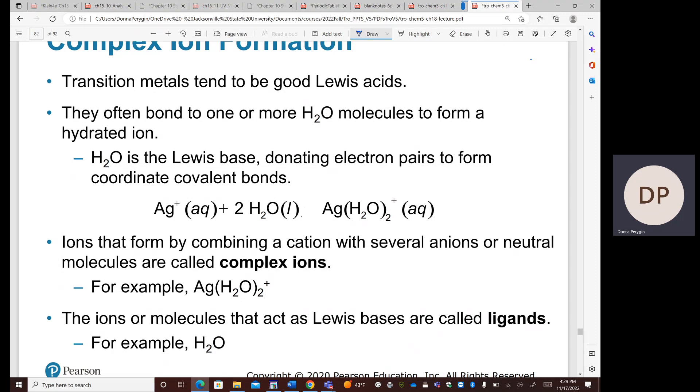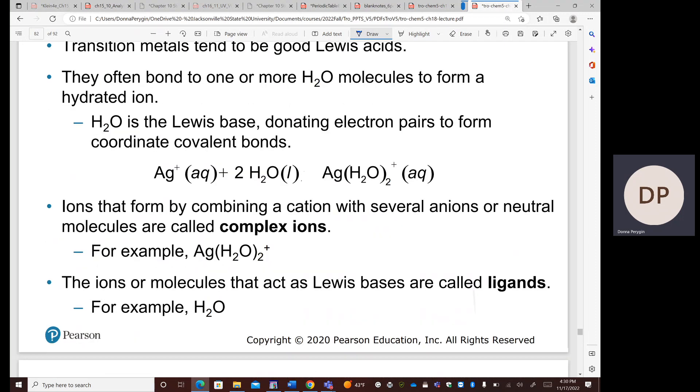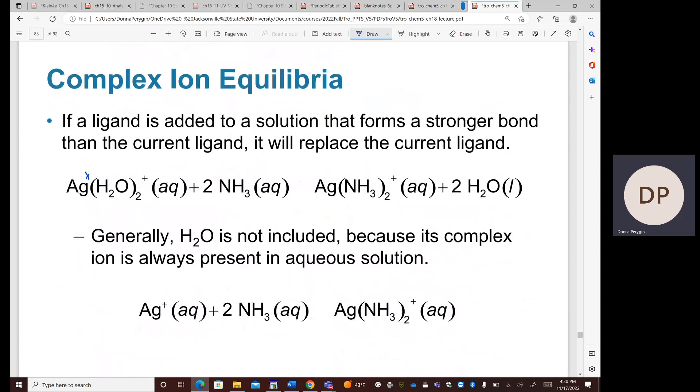Remember, a Lewis acid is deficient of electrons and can be a lone pair acceptor, and a Lewis base is a lone pair donor. In this case, the water is acting as a Lewis base, donating electrons to the Lewis acid and acting as a ligand. So the silver can become complexed.